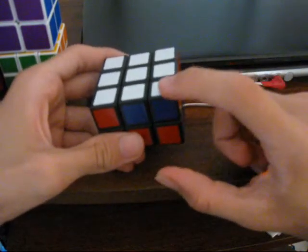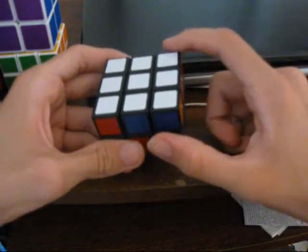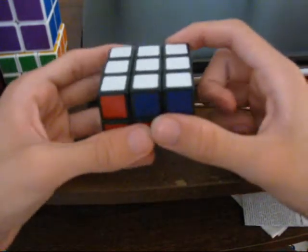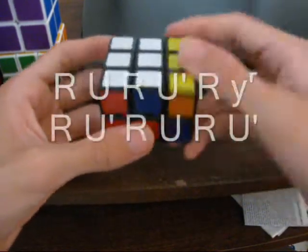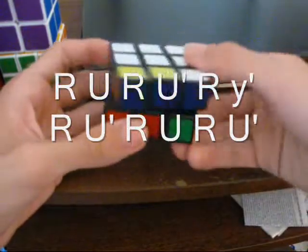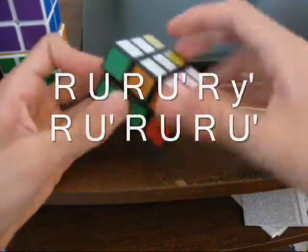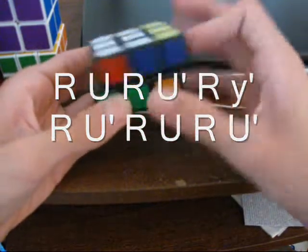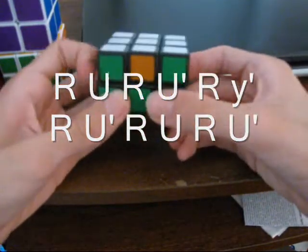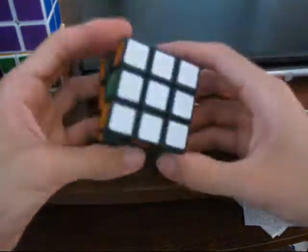So, the up front right and up back right corners need to be swapped. You do this algorithm. And you'll notice your corners are solved.